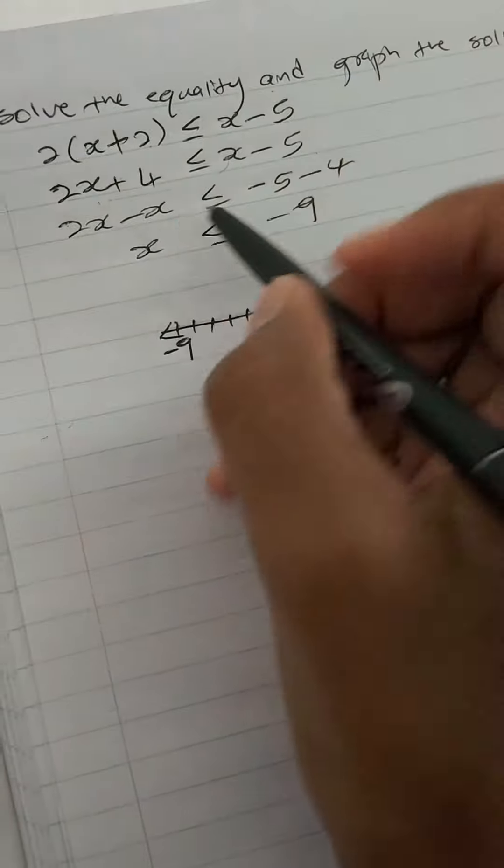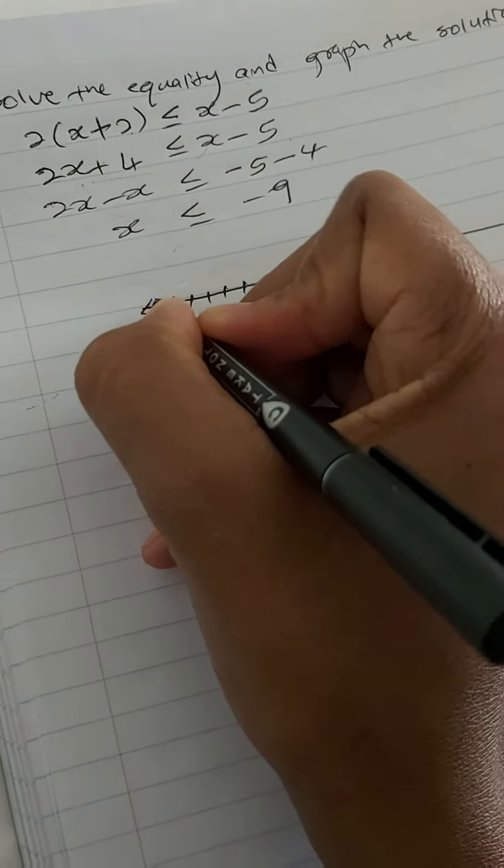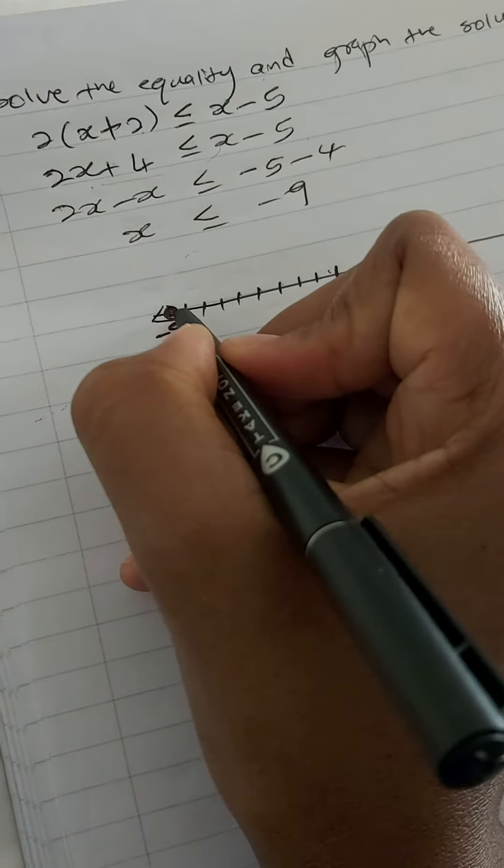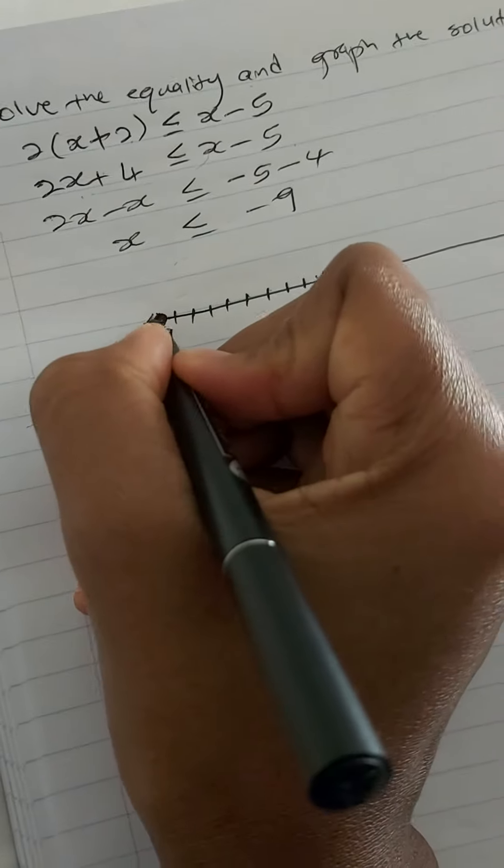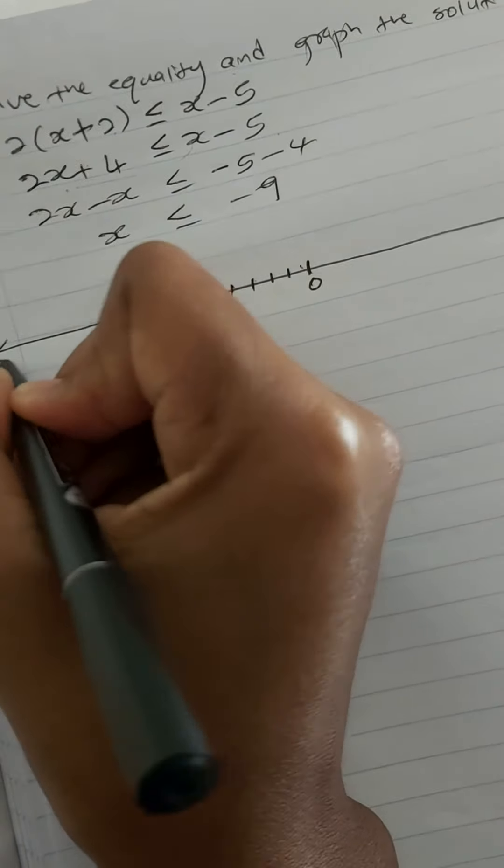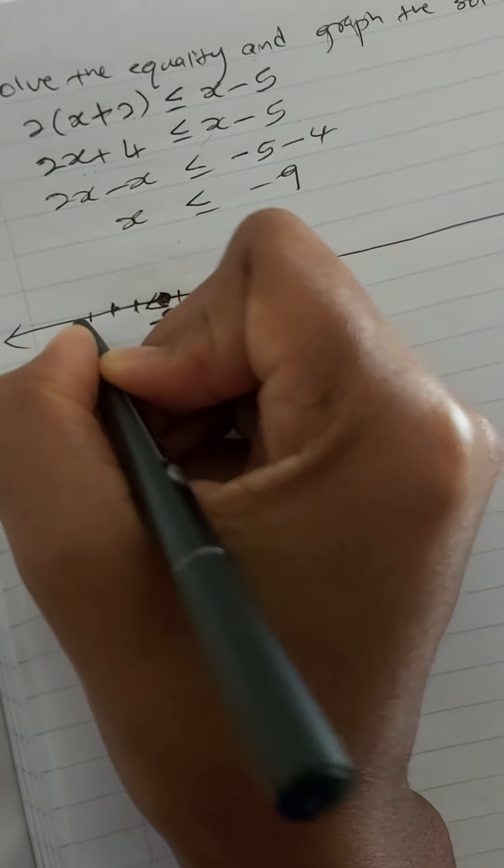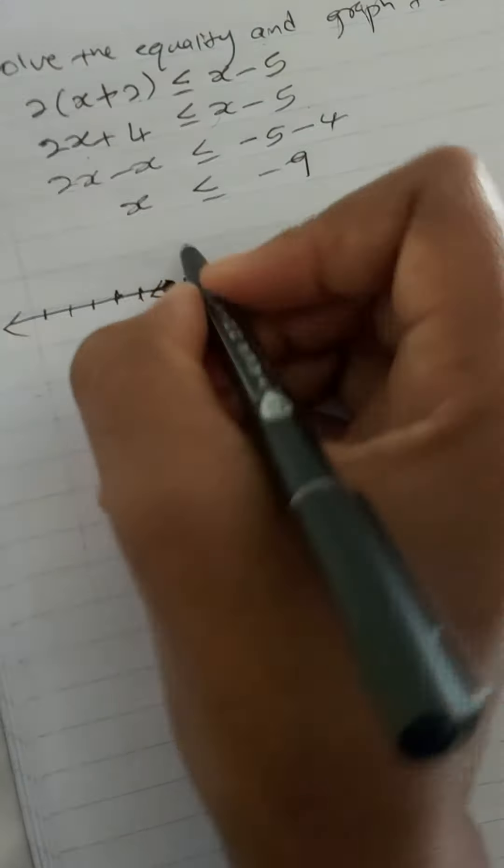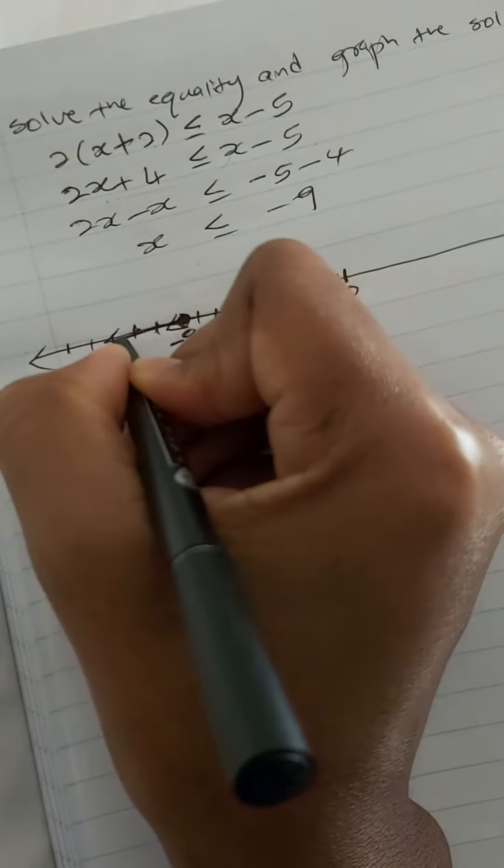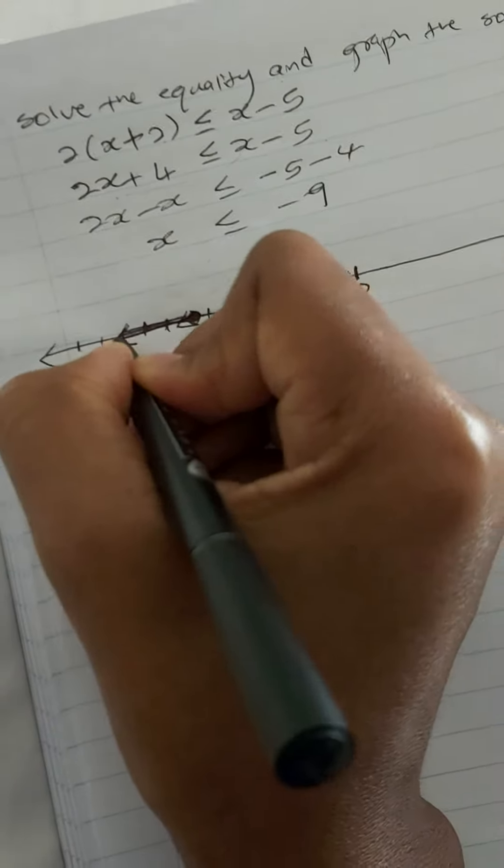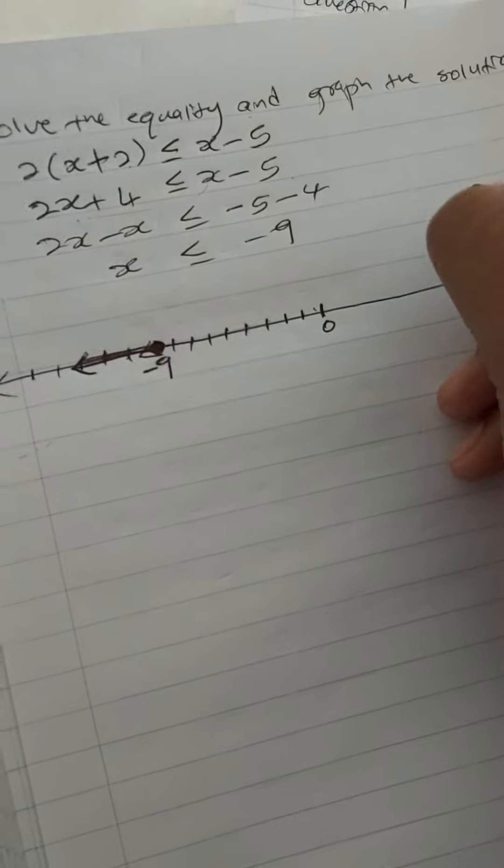This is minus 9, so we will have a solid circle there. It's less or equal to minus 9, so our number line is going to continue to that side, minus 10, minus 11, minus 12, minus 13, minus 14. So the graph looks like that. Make sure you circle this.